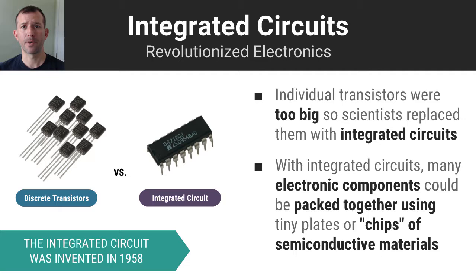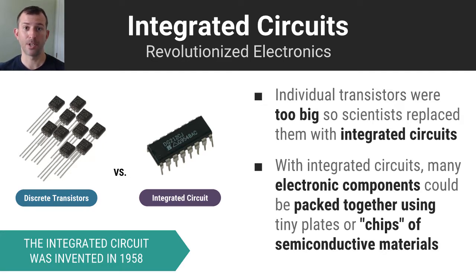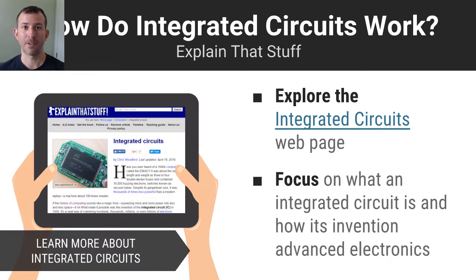Beyond transistors, it's the idea of integrated circuitry which really propels the computer forward. In an integrated circuit, you take many separate discrete components and combine them together. As you can see in the picture here, you've got discrete or separate transistors on the left, and then you have them all integrated into a single semi-conductive chip. This allows us to miniaturize the computer and ultimately lead to the computer in our homes and in every device imaginable. I've got an article about integrated circuitry as well, explaining what it is and its significance to the advancement of electronics and the computer.